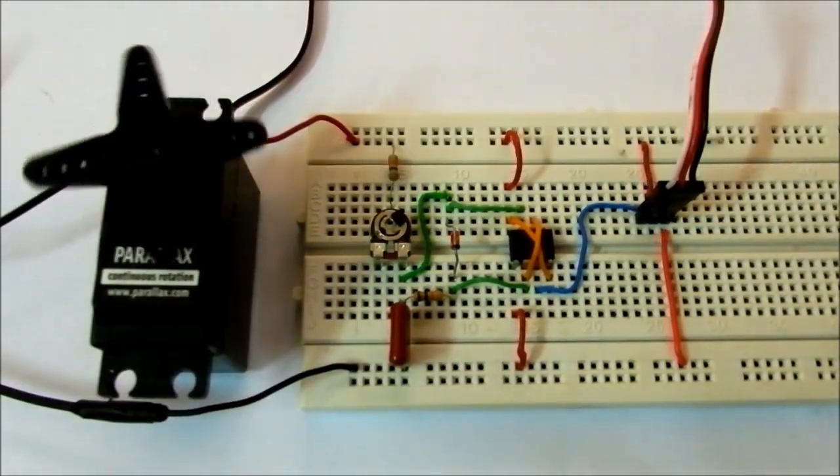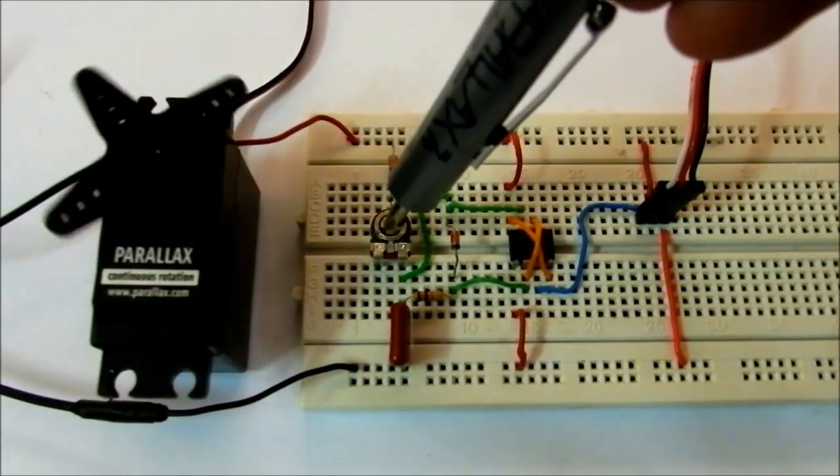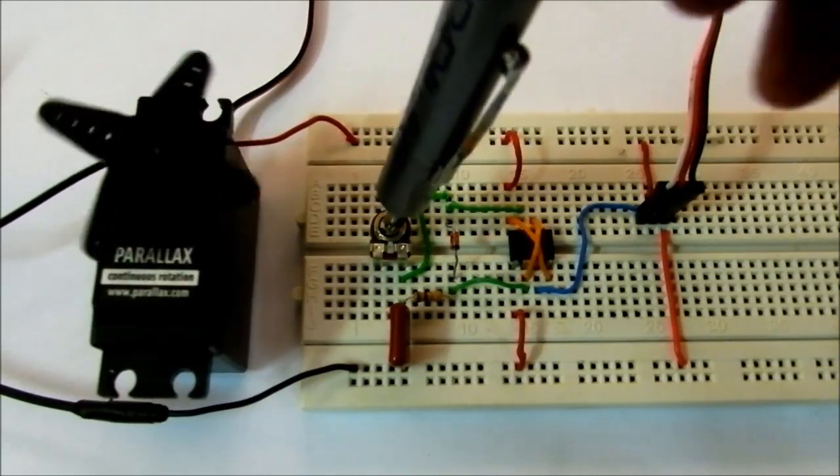So now we will vary the speed with the screwdriver by varying the potentiometer's value.